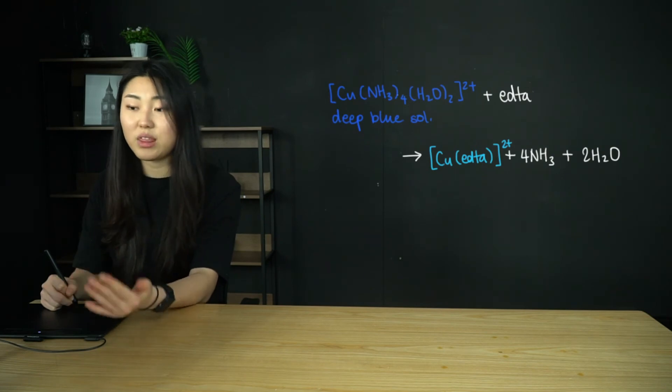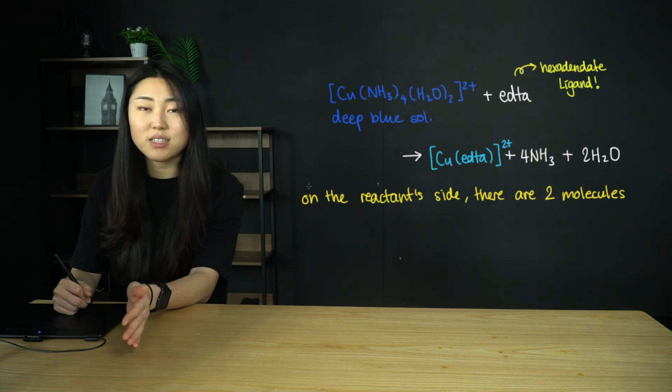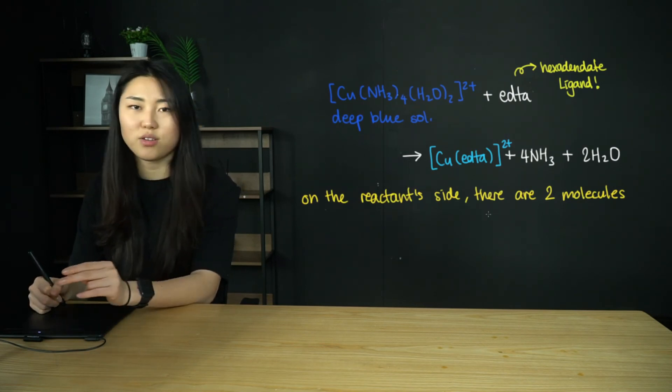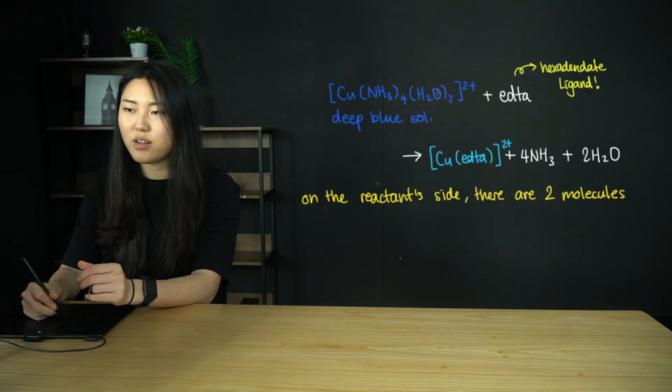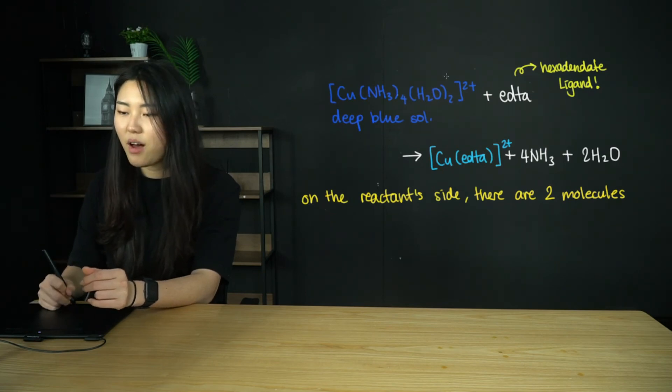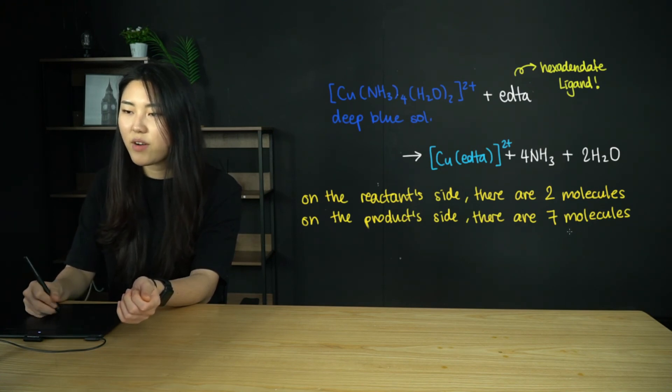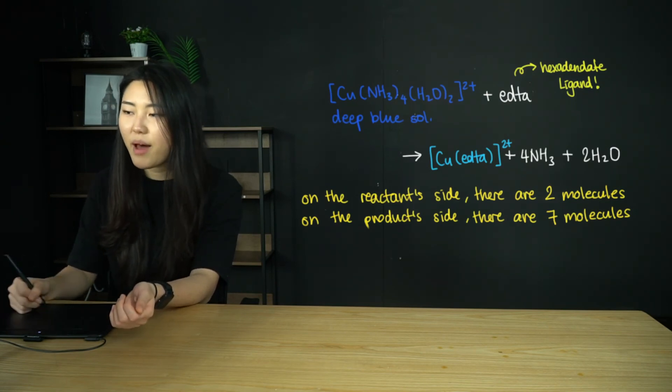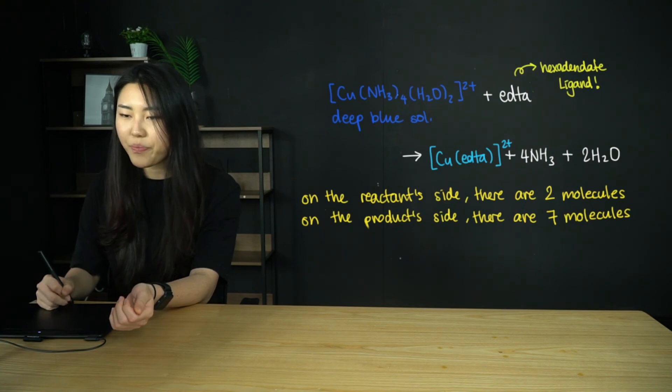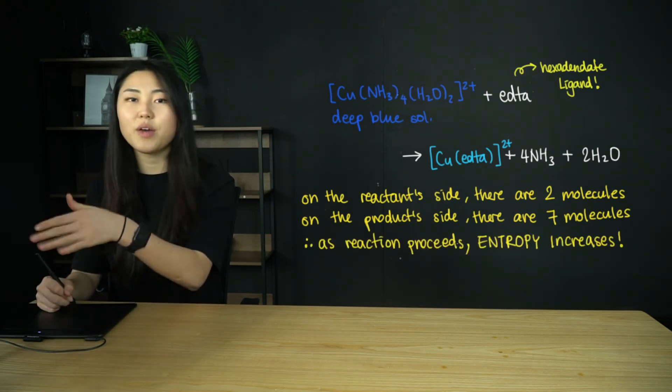What I want to discuss with this reaction: on the reactant side, there are two molecules—the EDTA molecule and the deep blue copper complex. On the product side, there are seven molecules. We have our complex, four molecules of ammonia, and two water molecules. If you combine all that, that's seven molecules.